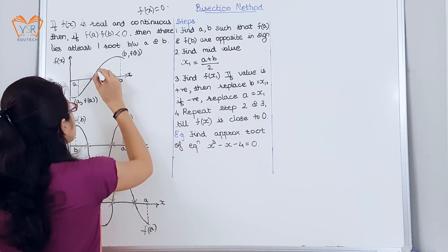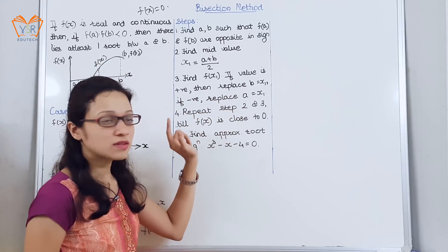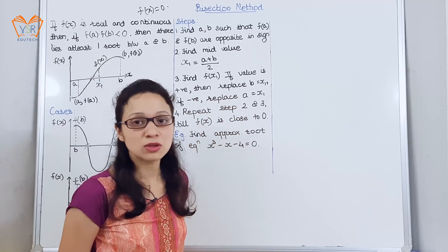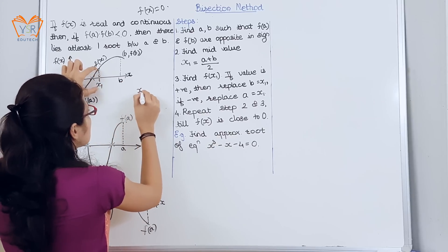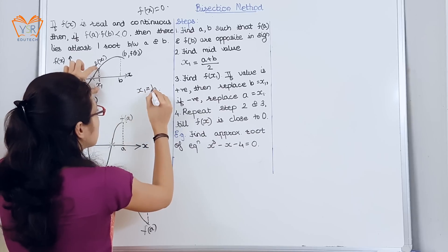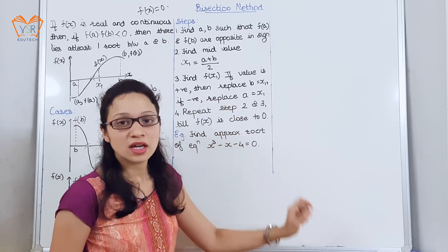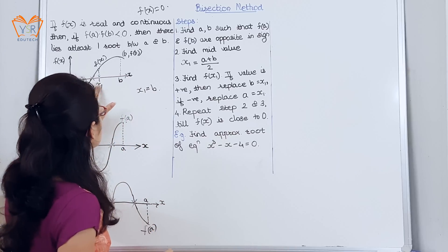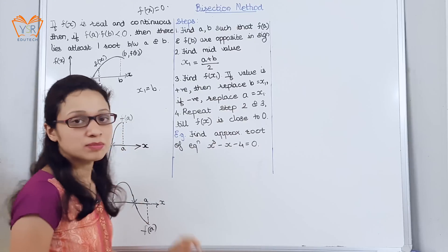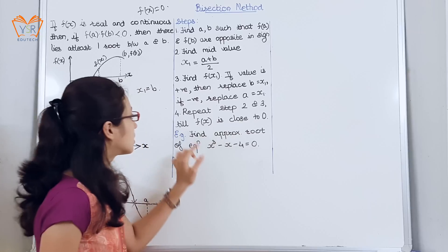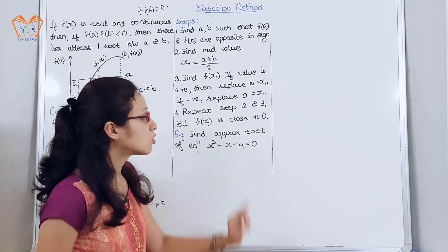We find f(x1). If f(x1) is positive, replace b with x1. If f(x1) is negative, replace a with x1. In this case as it is positive we are replacing it with b; if it were negative we would have replaced it with a. Step 4: repeat steps 2 and 3 until f(x) is close to 0.